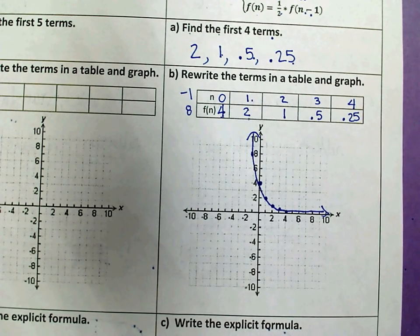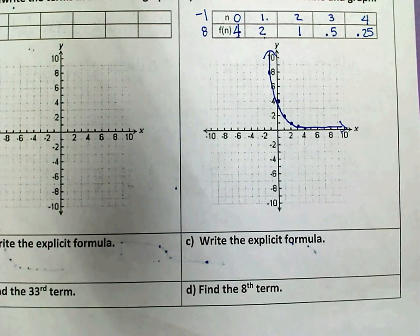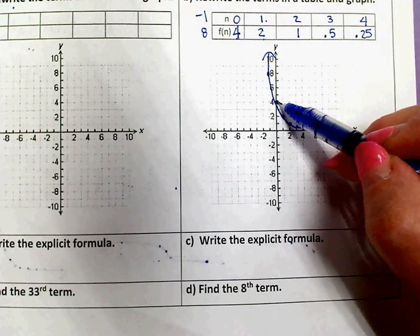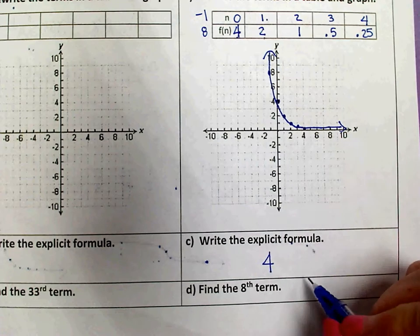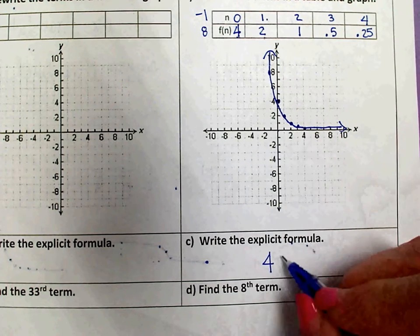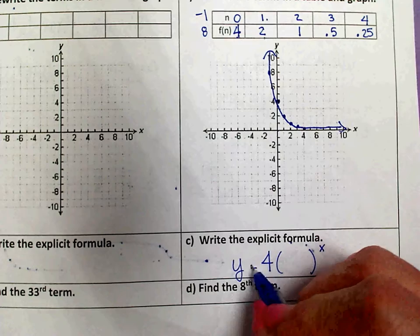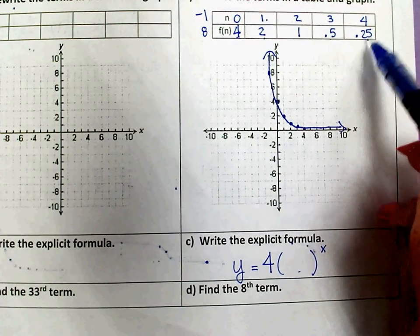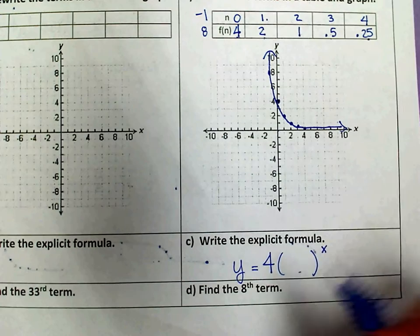Now to write the explicit formula. My initial value, that's what I had to start with, which is the y-intercept, which we've already figured out, is 4. And we know that it's going to be something to the power of x. And that something is the factor that we use to find the next y-value each time, which would be 1 half.